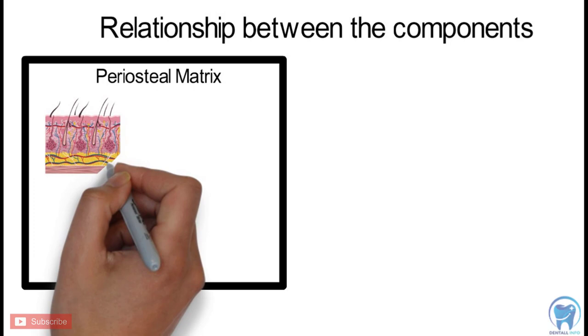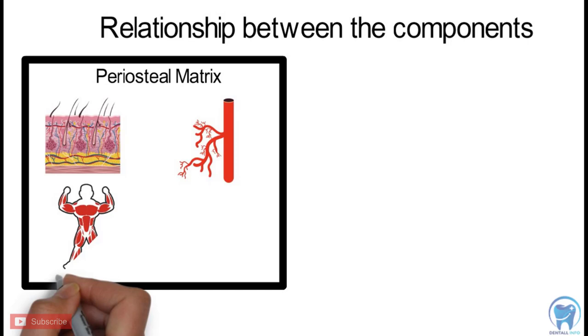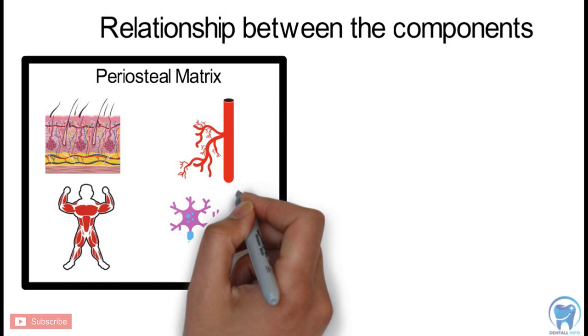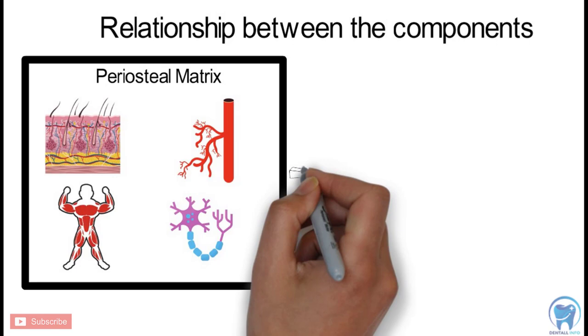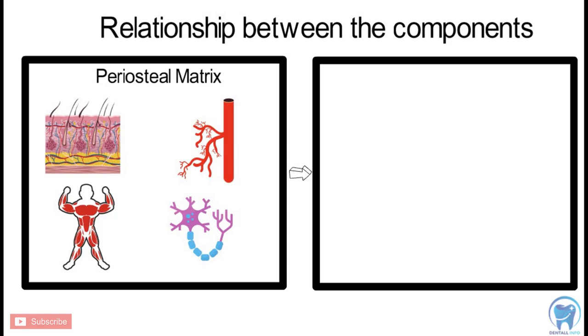This transformation, due to the action of periosteal matrices, is brought about by the expansion of bone deposition and resorption.